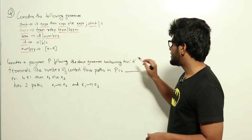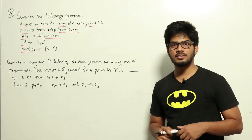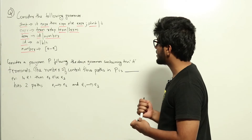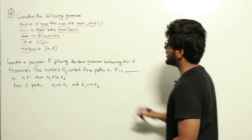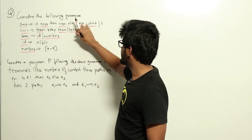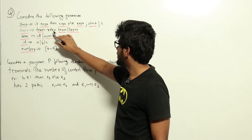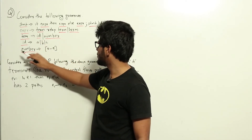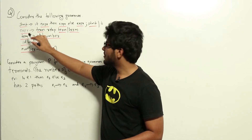We've been told there are 10 if terminals and we need to find the number of control flow paths in P. This is a parser question. Looking at the grammar: statement generates an if-then-else. Expression gives term relational-operator term, or term. Term gives ID or number. ID gives a, b, or c. Number gives 0 or 9. So in each step, a variable can only produce variables from productions below it in the grammar.